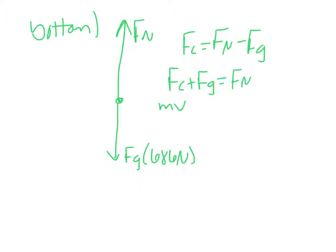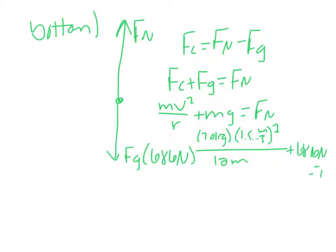So my Fc, mv squared over the radius plus mg equals Fn. m is 70 kg, the v you hopefully stored in your calculator as v, so 1.5 keeps on going meters per second squared over 12 meters plus 686 newtons equals Fn.